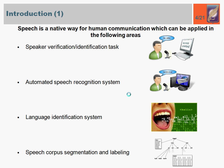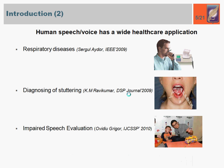Speech is a native way for human communication, which can be applied in different areas like speaker verification and identification, automated speech recognition systems, language identification based on analysis of a pre-known sentence, and speech corpus segmentation for study purposes. Also, an analysis of human speech or voice has wide healthcare applications. Based on voice and sonogram, respiratory disease can be successfully revealed, and an analysis of pronounced speech can detect stuttering and help estimate the scale of speech impairment.